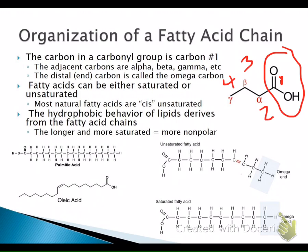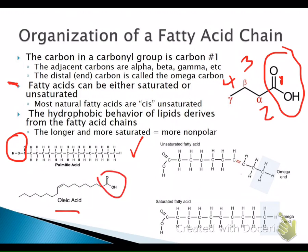Fatty acids can be either saturated or unsaturated. Palmitic acid is a very common fatty acid found in nature — it comes from palm trees and eventually forms palm oil. It has a carboxylic group on one end and the rest is a saturated chain of carbon and hydrogen. Oleic acid also has the carboxyl group, but this time there's also a double bond, making it an unsaturated fatty acid chain.